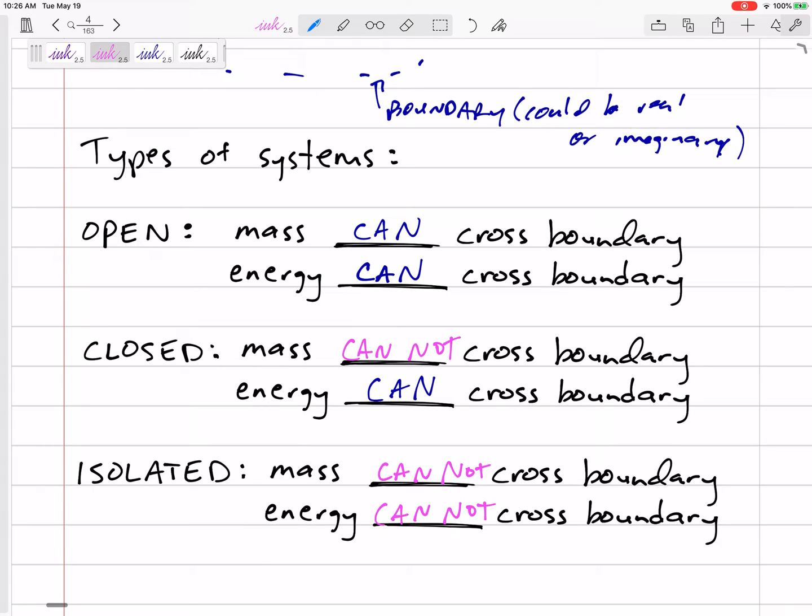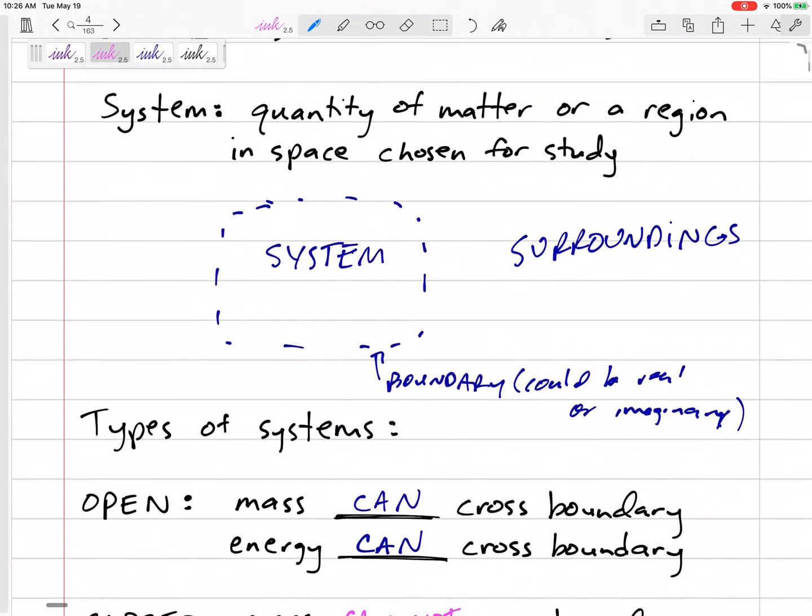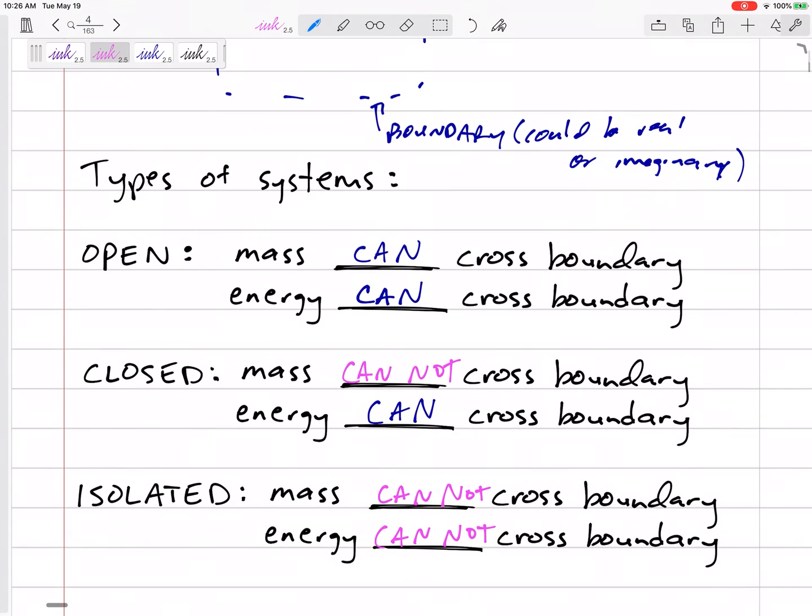Hey, it's a closed system, then I know there's no mass going in or out. If I know it's isolated, there's no mass and no heat, not even energy can go in or out. So just a few definitions that will be helpful when we start summing our energy for all these different systems.